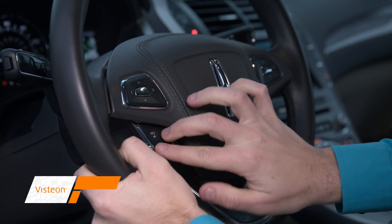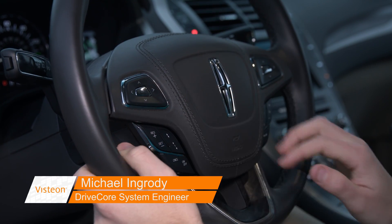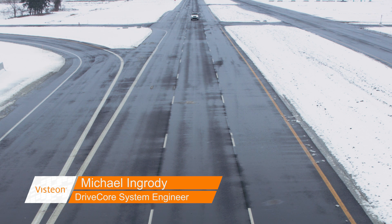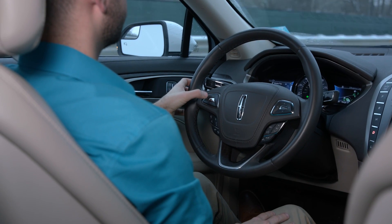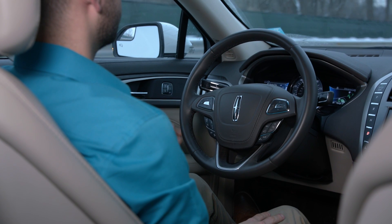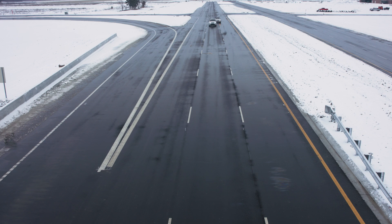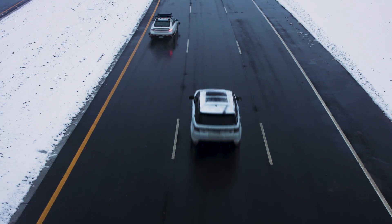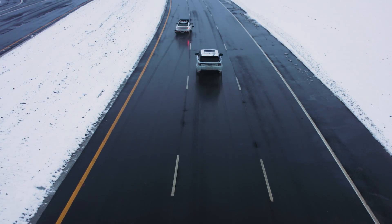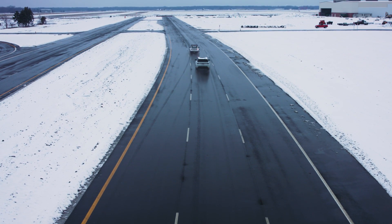I'm in DriveCore autonomous mode. We currently have lane keeping based on the lane markers that are picked up by our camera. And now I'm initiating a left lane change over the lane markers to overtake a leading vehicle. We've successfully made it into the left lane. I'm going to initiate a right lane change back in front of that vehicle.